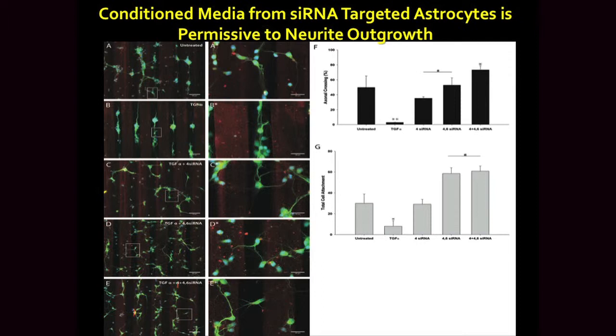This is important because it tells us we have very specific targets — not brute force — to try to modulate the inhibition of CSPGs, in the spirit of what Dr. Blackmore was suggesting.